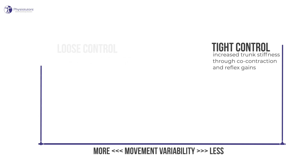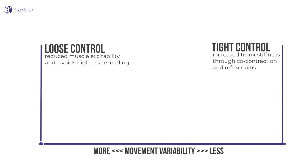The loose control pattern involves reduced muscle excitability and usually avoids high tissue loading, at the cost of loose control over movement. If muscular control over spine movement is reduced by inhibition and associated with delays in response to perturbation, this may lead to fast and larger amplitude movements with more variability between repeated performance of the same task. Too much variability might reflect uncontrolled motion. If muscular control over the spine fails, mid-range and sustained end-range alignment of the lumbar vertebral segments through creep may be compromised, and loading the tissues could lead to tissue strains and potentially pain.